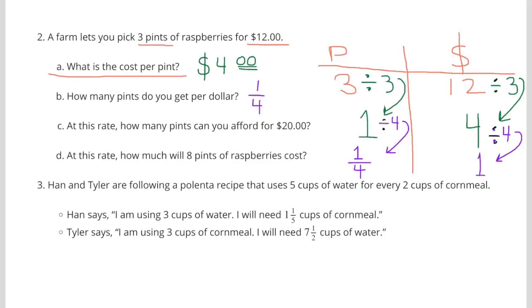B. How many pints do you get per dollar? So I divided the $4 by 4 to get $1, and I divided the 1 pint by 4 to get 1 fourth. For $1, you can get 1 fourth of a pint.